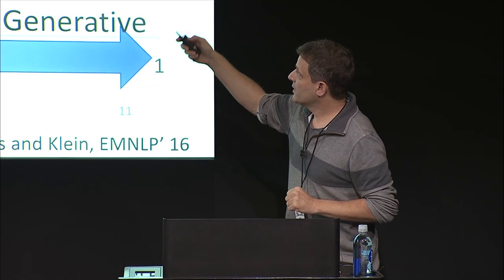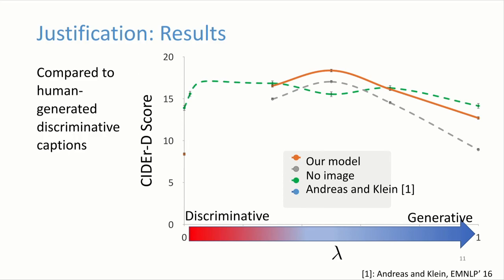Using the image actually helps — that's the orange curve compared to the gray curve. The green curve is from a baseline method using a different optimization technique, and it turns out that in the middle ground our approach is a bit more effective.